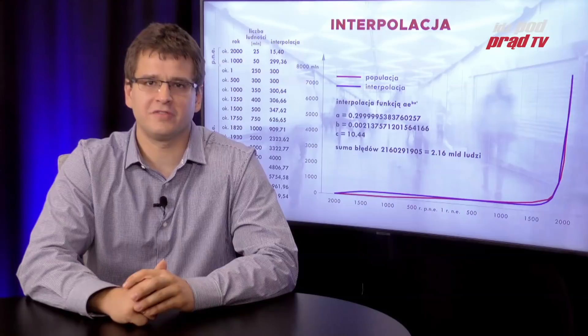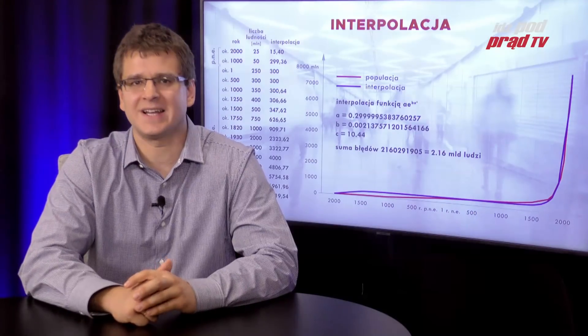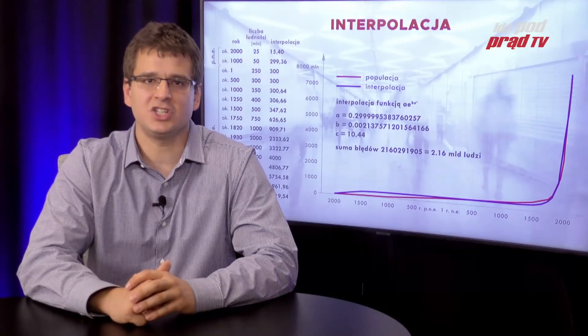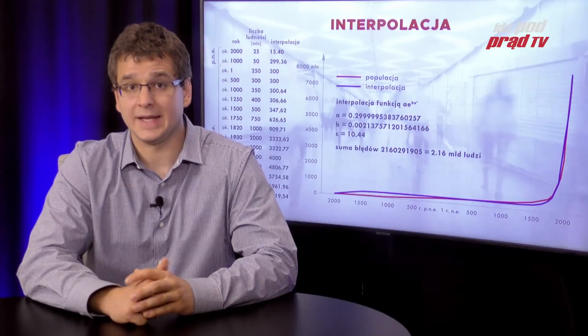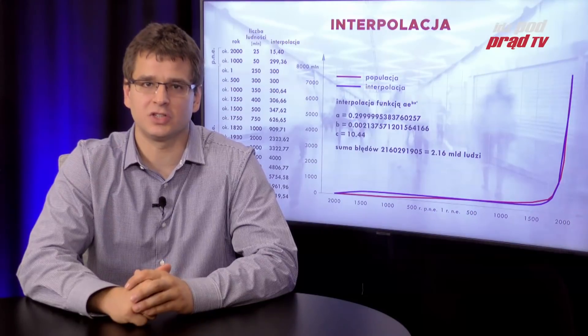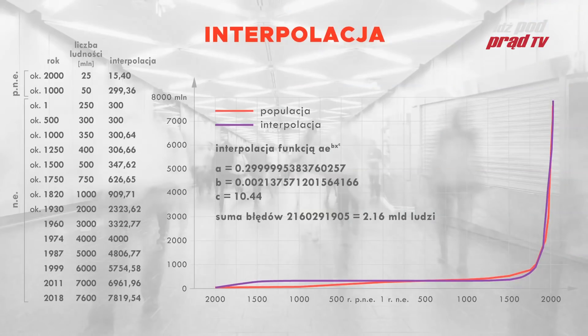Ewolucjoniści opowiadają o 200 tysiącach lat historii człowieka i 10 tysiącach ludzi 70 tysięcy lat przed Chrystusem. Jak to się ma do danych wyznaczonych przez naszą interpolację? Otóż możemy sprawdzić, kiedy nasza funkcja przyjmuje wartość 8. Tylu ludzi zostało zabranych na Arkę Noego. Okazuje się, że miało to miejsce około 2365 roku przed naszą erą.